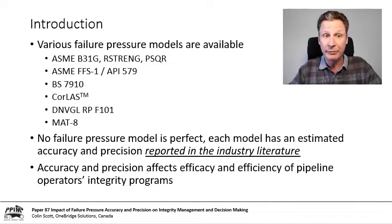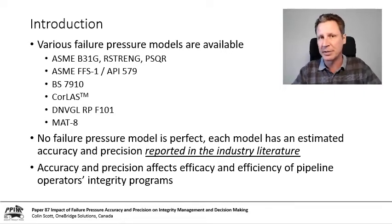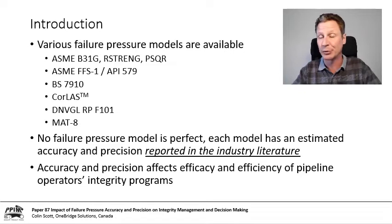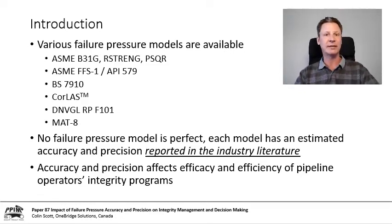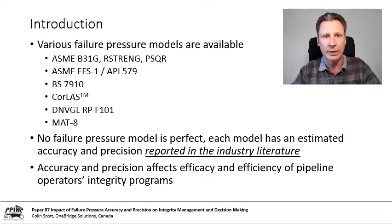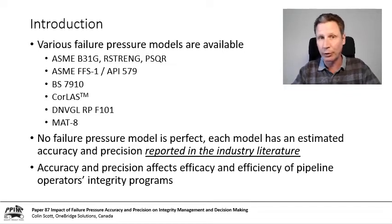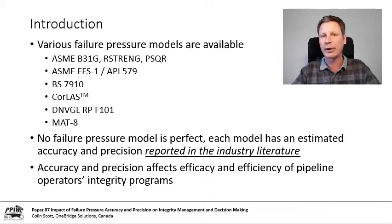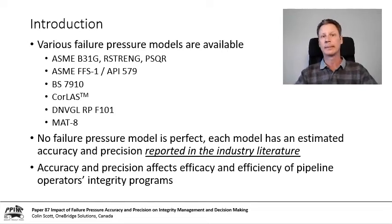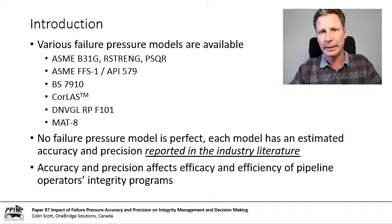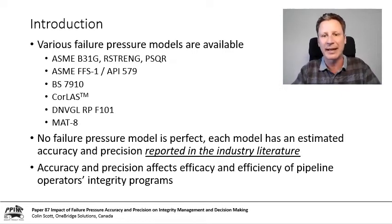As I'm hoping all of you will know, there are various failure pressure models available to industry. We can think about ASME B31G and its various subsidiaries like the R-String and P-Squared models. Some of you might be familiar with API 579, British Standard 7910, the CoreLAS model, DNB's Recommended Practice F101, or the recently developed MAT8 model from PRCI. Each one of these different models can be used for either crack assessment or corrosion assessment. But one of the things that we sometimes forget is that the models we're working with are not perfect. We usually do an assessment calculation, get a number, assume it's fixed in stone, and move forward. In this presentation, we're going to be thinking about how the accuracy and precision of each one of these models affects some of our decisions.